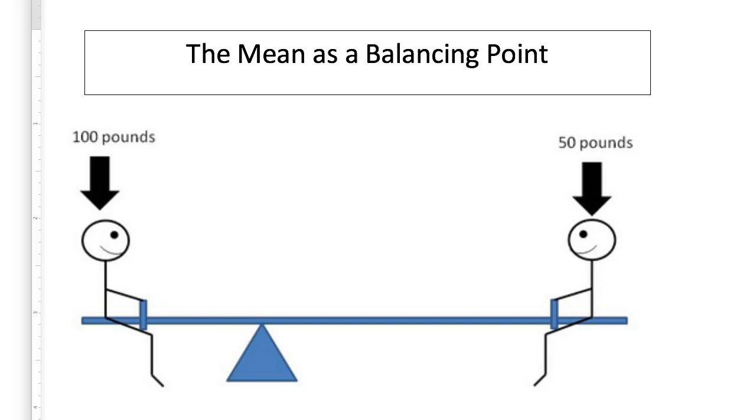For example, in this picture, the person on the left weighs 100 pounds. The person on the right weighs 50 pounds, only half as much. To balance the seesaw, the 50-pound person must sit twice as far from the pivot point as the 100-pound person.